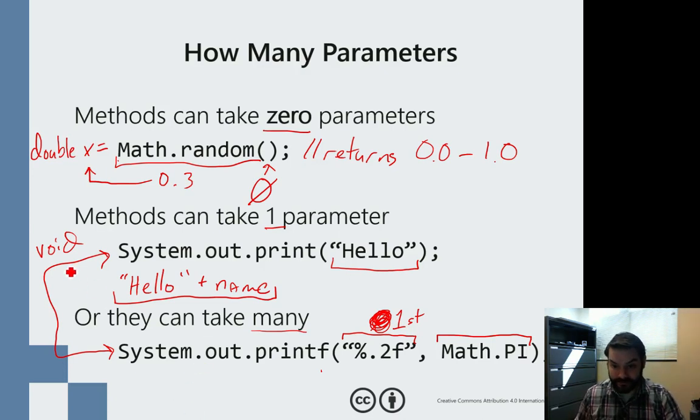System.out methods, on the other hand, do not return values. So we now introduce this idea of working with void.